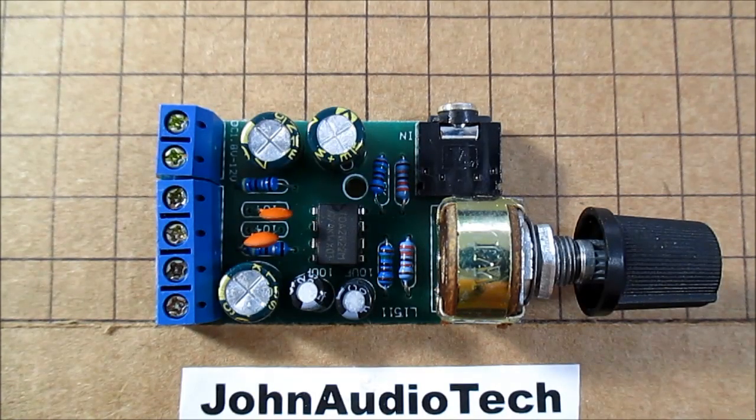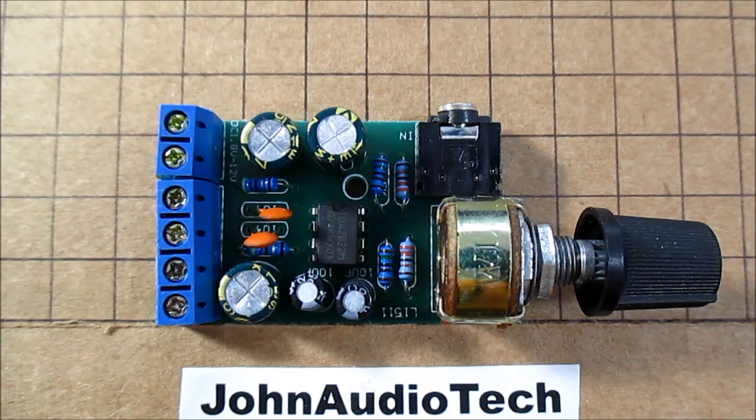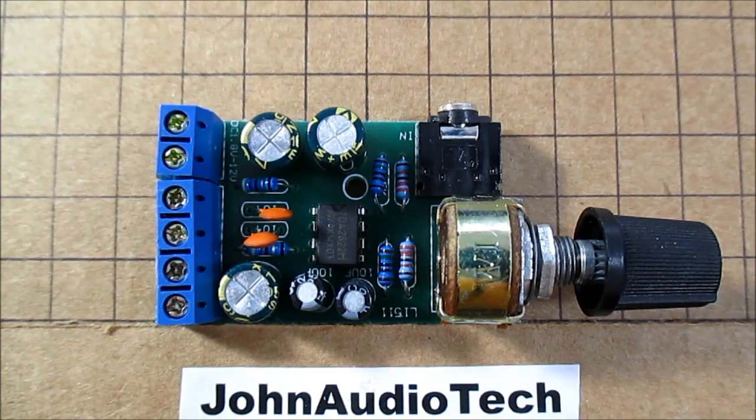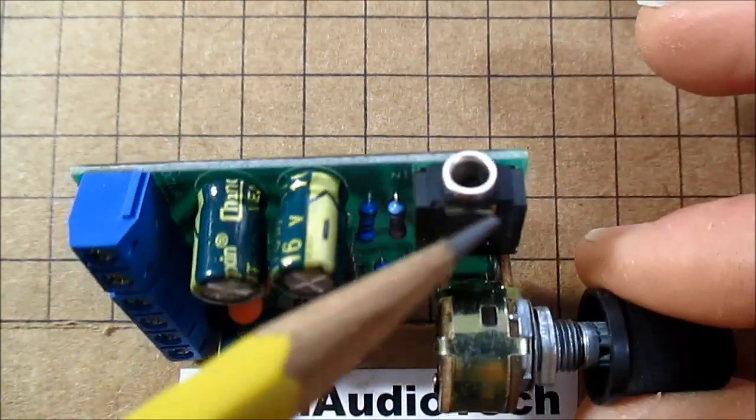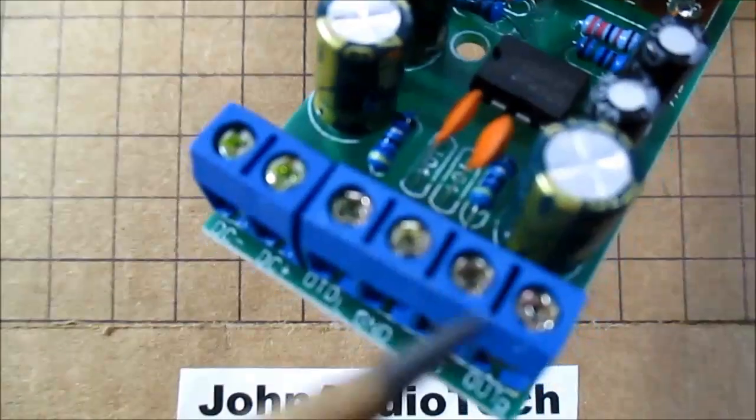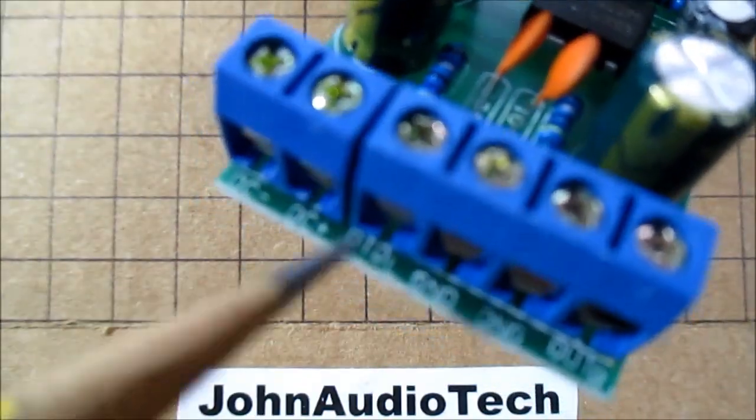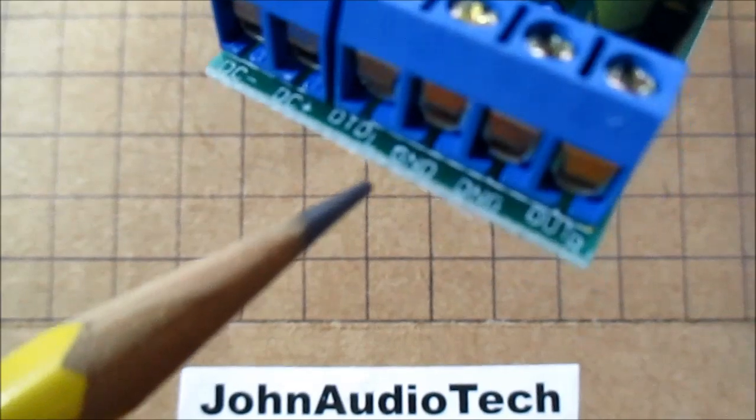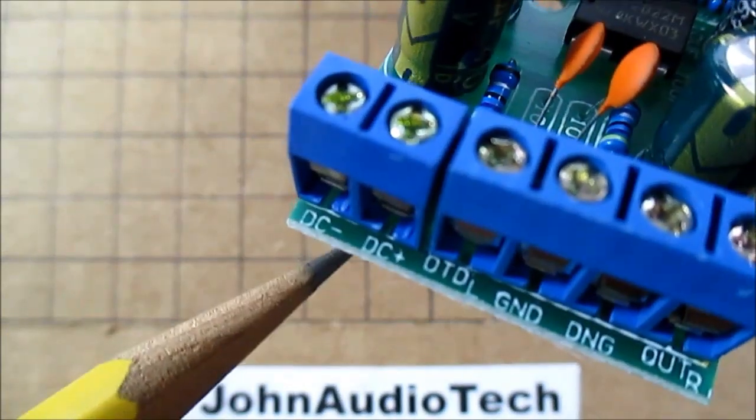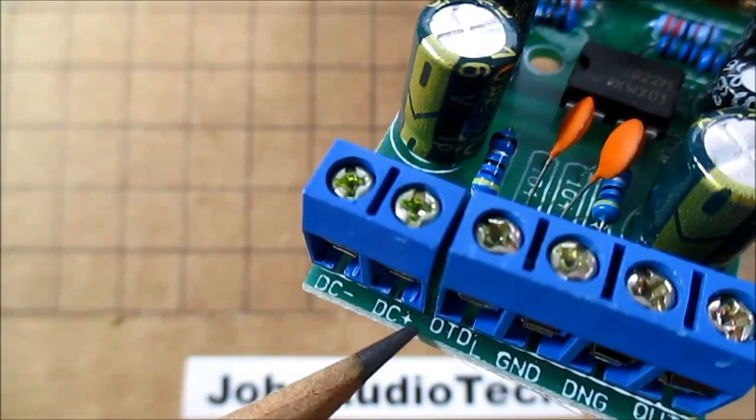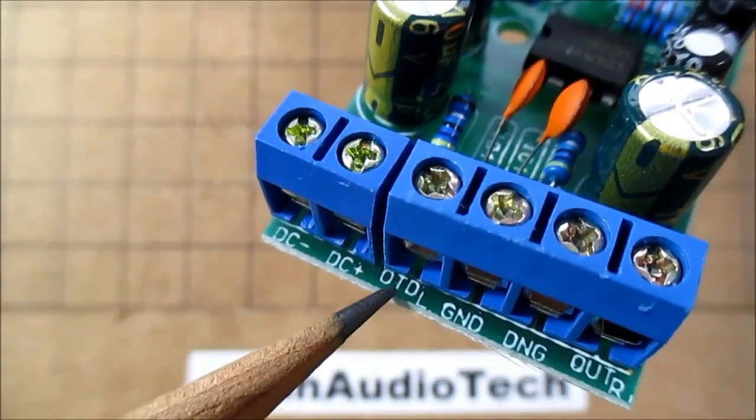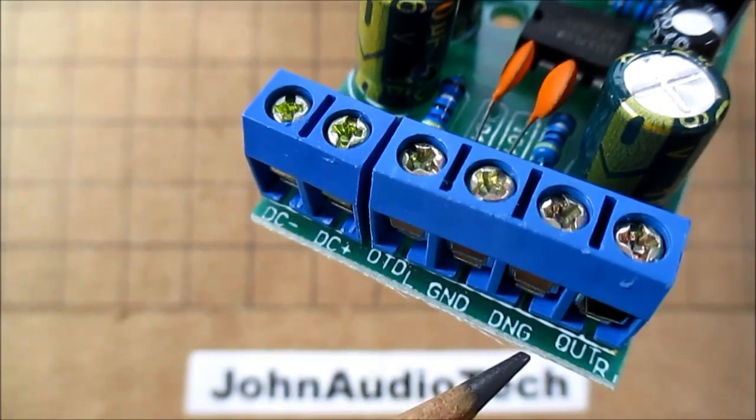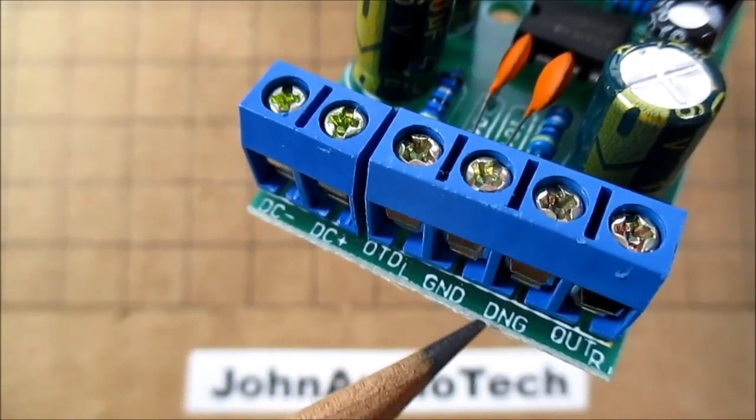So, what we have here is a TDA2822M, linear type stereo amplifier. It has a volume control, a little input jack here, and these connectors on the end. Not crazy about these blue ones. They're not the easiest to use, but they'll do. You have your power supply input, output, and ground. That's the left. And output right and ground.